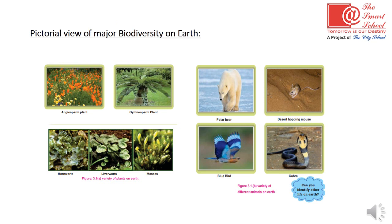Here is a pictorial view of major biodiversity on earth showing that organisms vary from one to another and are found in different regions. In the plant kingdom there are angiosperm and gymnosperm forms. Animals also have different variations — for example, polar bear, desert hopping mouse, bluebird, and cobra. Can you identify other life forms on earth? You can search through the internet to find how many variations among organisms exist.